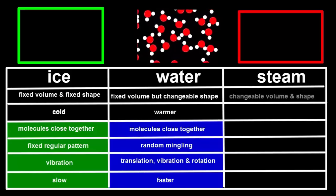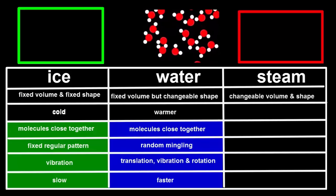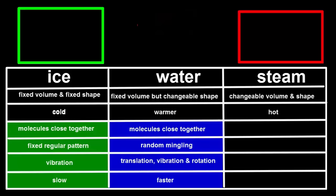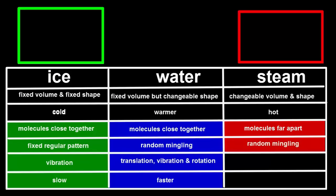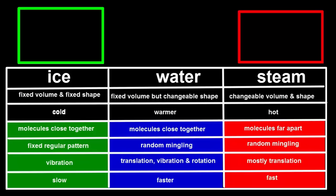Gases have both a changeable volume and a changeable shape. Their molecules are a long way apart, randomly arranged, moving in straight lines until they collide, and moving faster than in both solids and liquids.